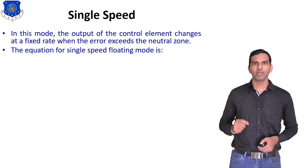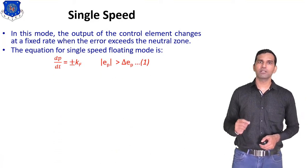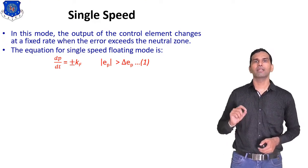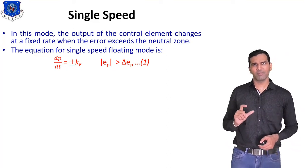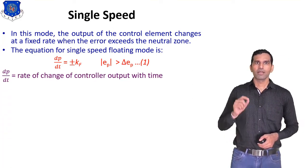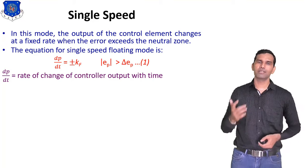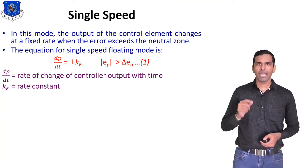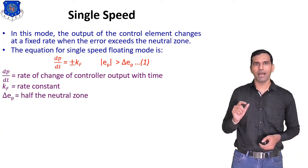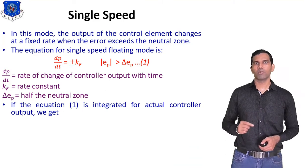The equation for single speed floating mode is: dp/dt = ±Kf, where ep > Δep. This is the mathematical representation. Here, dp/dt indicates the rate of change of controller output with time, Kf indicates the rate constant, and Δep indicates half the neutral zone.